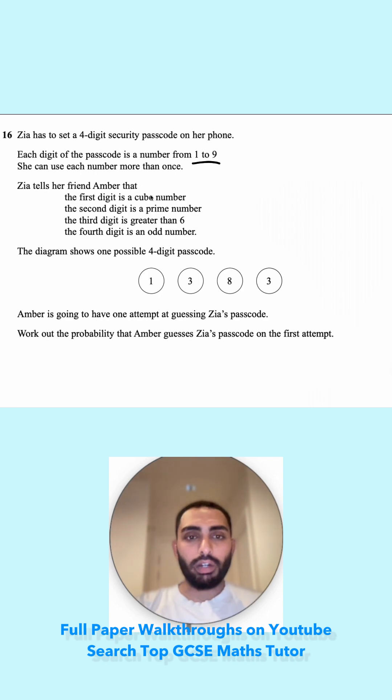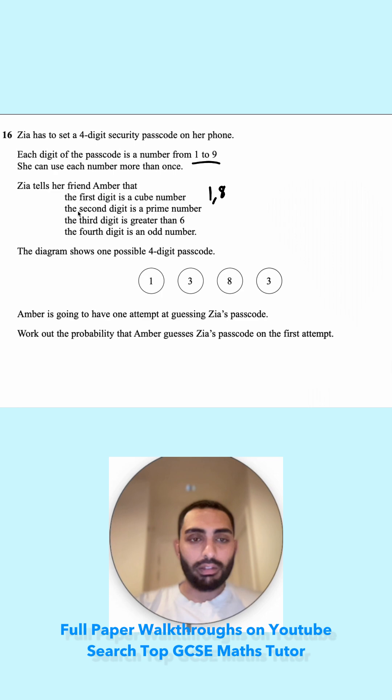What are our cube numbers between 1 to 9? The first cube number is 1. 2 times 2 times 2 is 8, and 3 times 3 times 3 will be 27, so that would be too big.